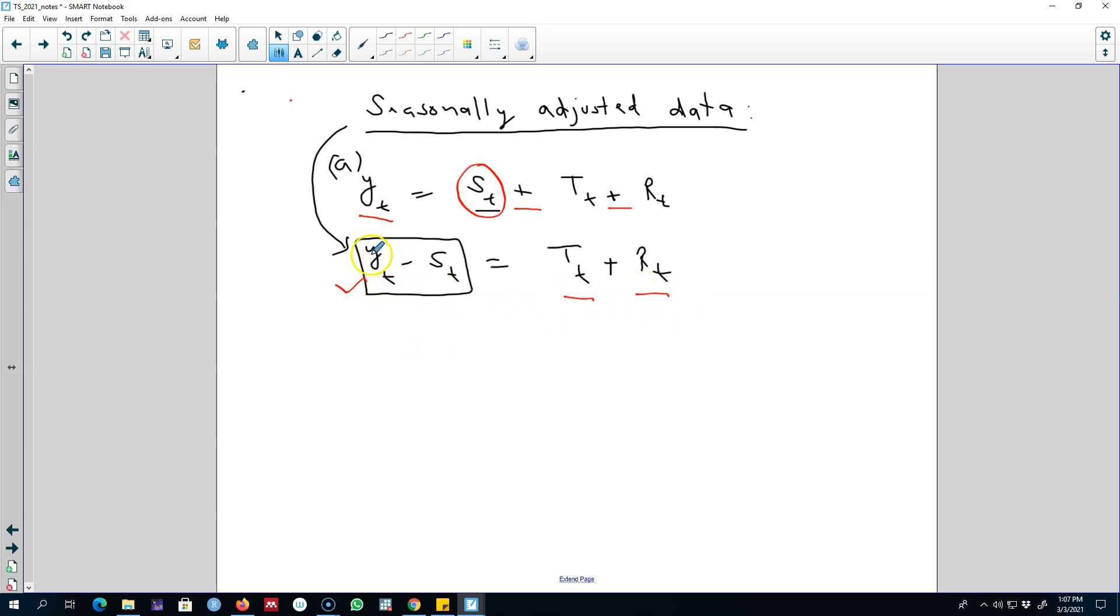...the remainder component. We can call this data Y_t star, or whatever we're going to call it. This data is now seasonality-free and we can concentrate on the underlying causes.